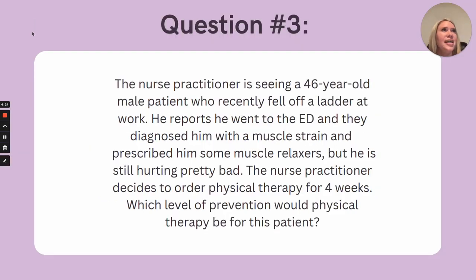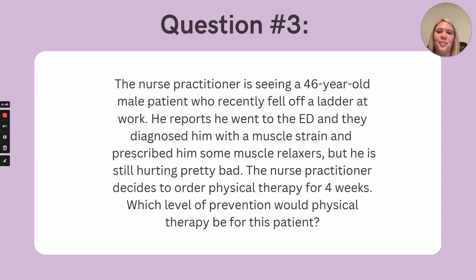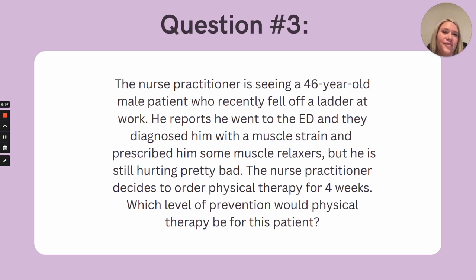And then the last question: the nurse practitioner is seeing a 46-year-old male patient who recently fell off a ladder at work. He reports he went to the emergency room and they diagnosed him with a muscle strain, and they also prescribed him some muscle relaxers, but he's still hurting pretty bad. The nurse practitioner decides to order physical therapy for four weeks. Which level of prevention would physical therapy be for this patient? And if you're thinking tertiary, you are correct. With tertiary, we are treating our patient. In this case, he has that diagnosis of a muscle strain, so we are further treating him and helping him to strengthen his muscles with physical therapy.